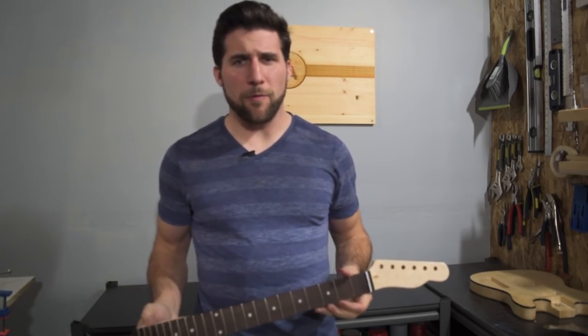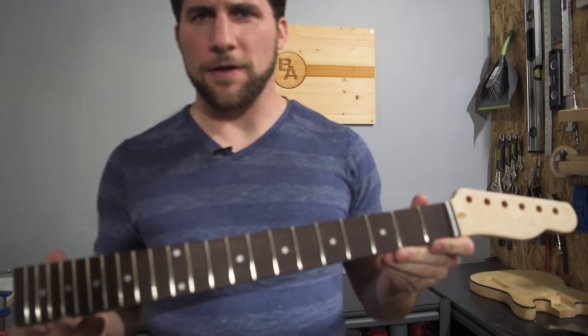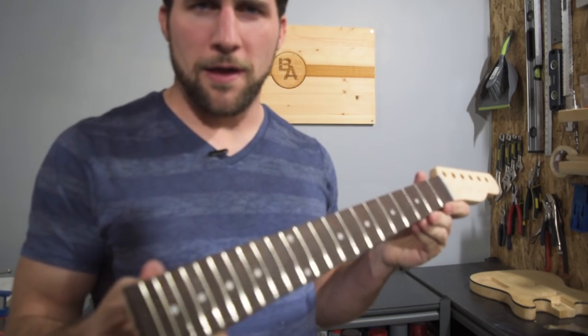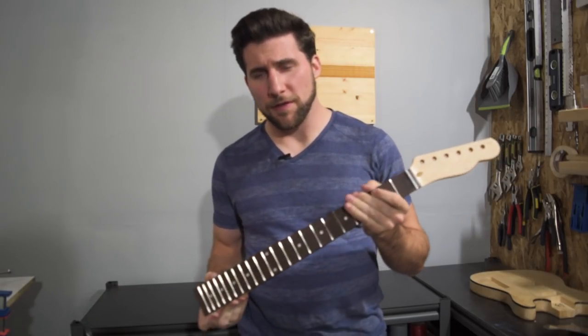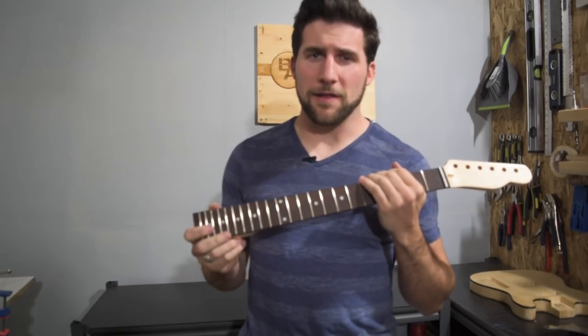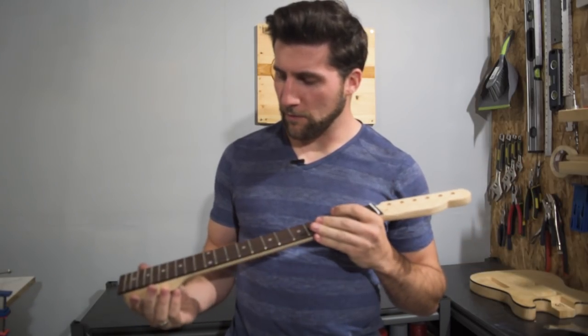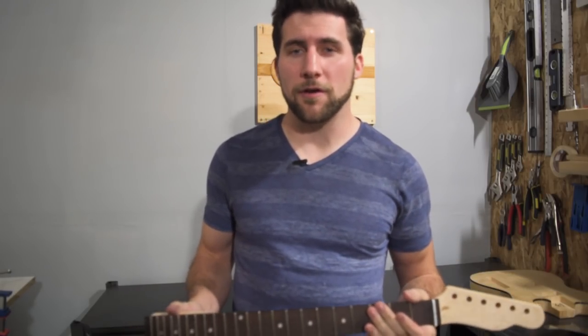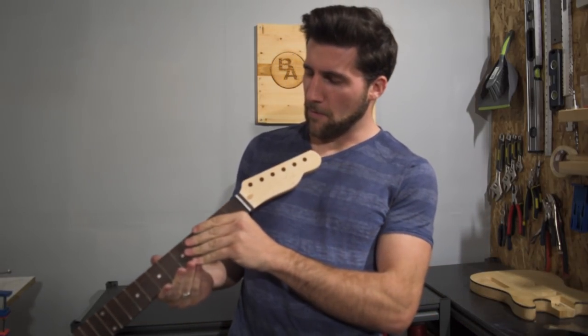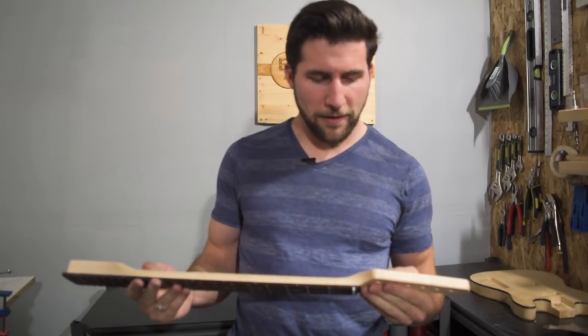All right guys well that covers our fretwork as you can see that's all nice and shiny now. Good and flat, nicely crowned, comfortable along the edges. This thing's ready to go. That's the fretwork completed. That's going to be a very important part of making this guitar kit play more like one of those $550 to $700 guitar kits. So yeah I'm pretty happy with how that went.